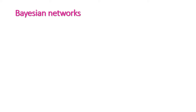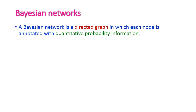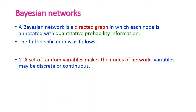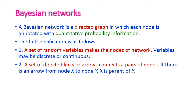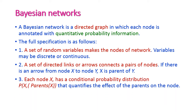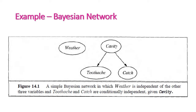A Bayesian network is a data structure, also called a belief network, probabilistic network, causal network, or knowledge map. Its extension is called a decision network or influence diagram. It is a directed acyclic graph (DAG) in which each node is annotated with quantitative probability information. It consists of a set of random variables as nodes (discrete or continuous), directed links between nodes, and a conditional probability distribution P(X | parents(X)) for each node.